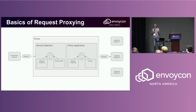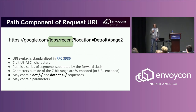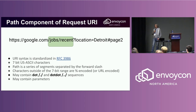Depending on the result, it may reject the request or let it go through. By far the most common request property used for both service selection and policy application is the path component of the request URL.